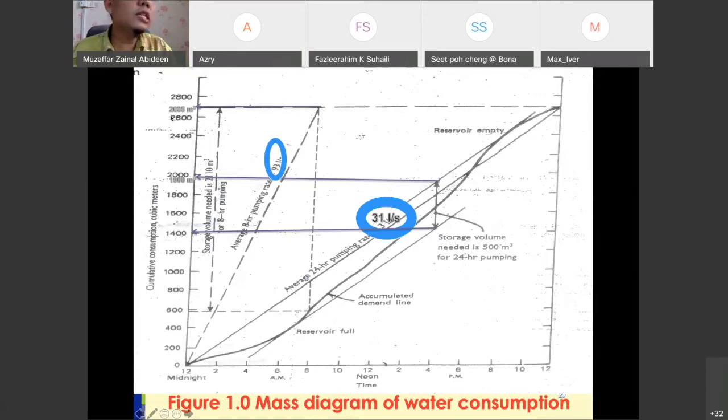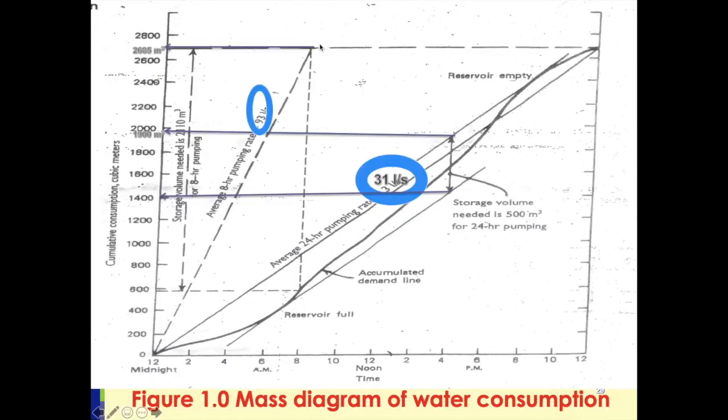The max value is 2685 meter cube. That means within these eight hours, from 12 o'clock midnight until eight o'clock in the morning, they've got to pump the water so that by eight o'clock in the morning, the storage reservoir has already had 2685 cubic meter of water. So that's why they need to pump really quickly, to achieve this level or to achieve this volume.